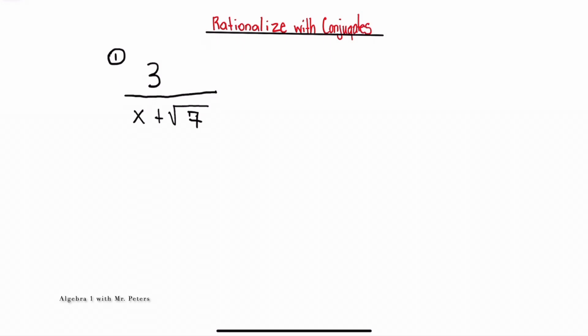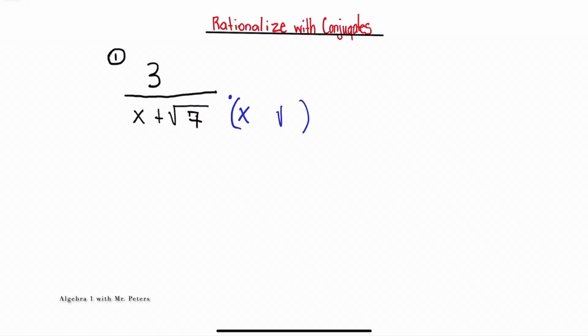In our first example we're going to see a binomial in the denominator that has one radical with no coefficient in front. To simplify, we're going to multiply by the conjugate, which is basically the same exact expression — x plus radical 7 — but with the opposite sign. We have to make sure that when we multiply, we do that to both the denominator and the numerator. When we look at the bottom of this fraction, please remember that the difference of squares applies.